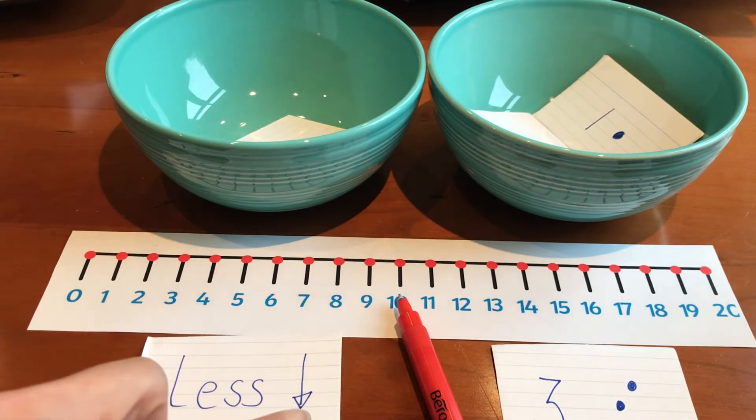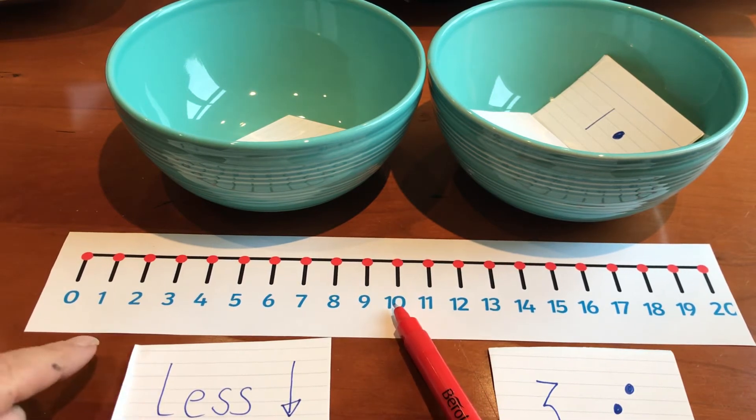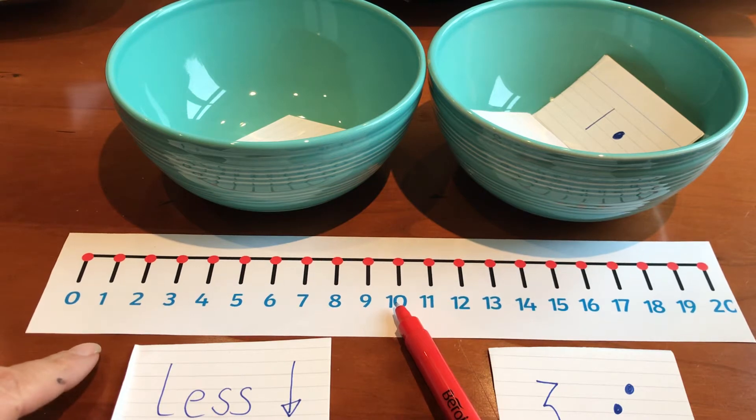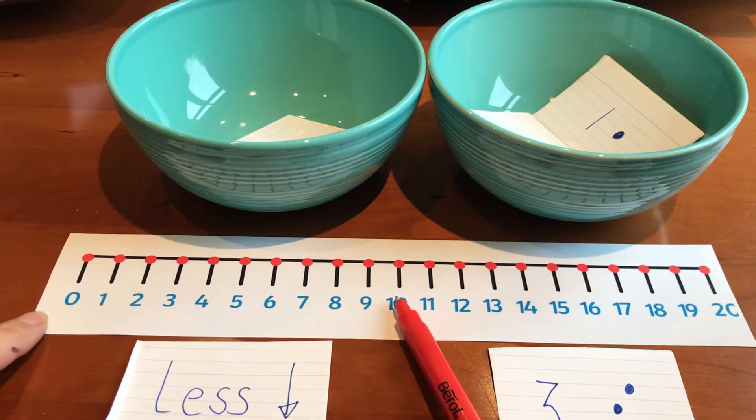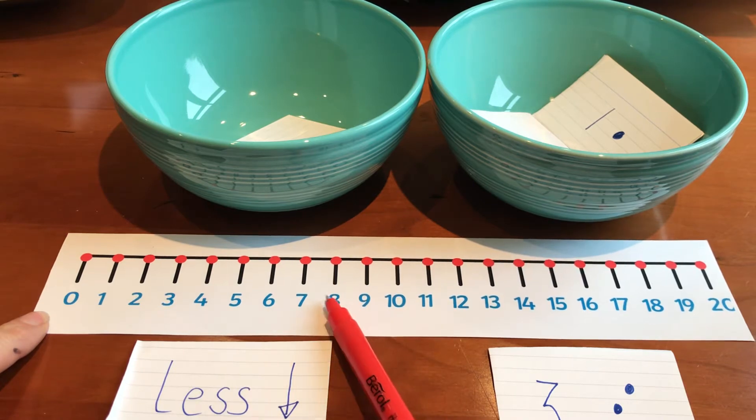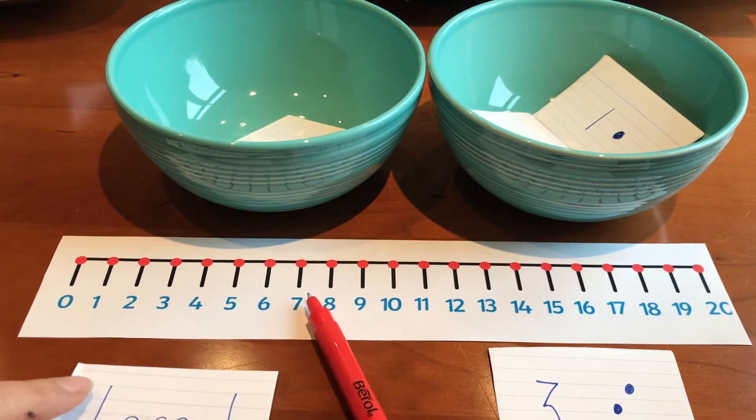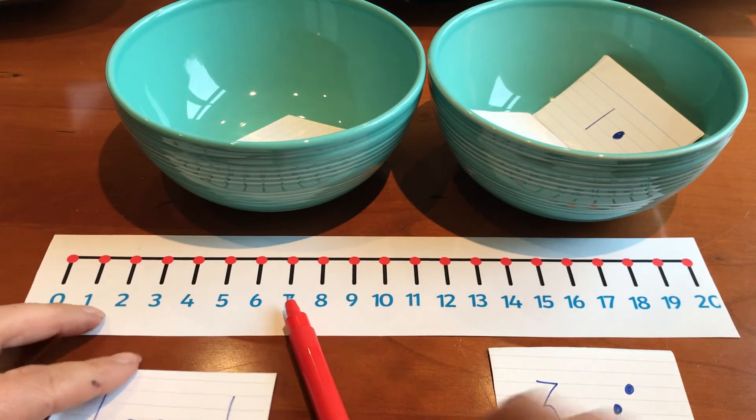What have I got? I've got less 3. So I've got my pen on number 10. I'm going to count down 3. I'm going to do 3 less than 10. Now, I'm not going to count 1, 2, 3. I'm going to count down from 10. So I'm going to go 9, 8, 7. Okay, so I've counted down.